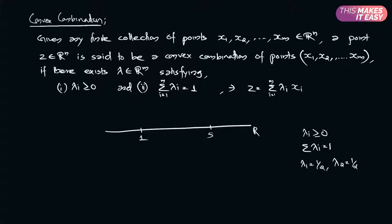If I scale up lambda 1 into 1, I will get 0.5, plus lambda 2 into 5, I will get 2.5, so the total is 3. So 3 will be somewhere here, and we can say that 3 is the convex combination of 1 and 5. That is the idea behind the convex combination.